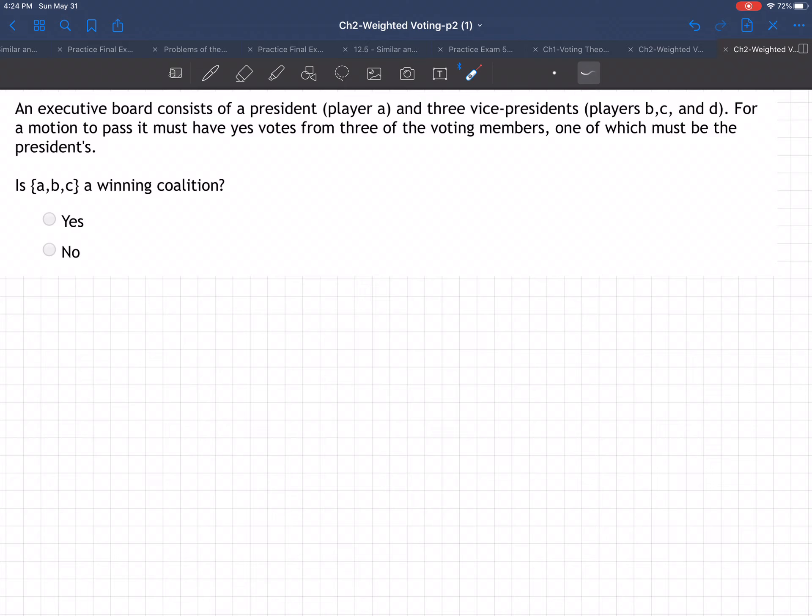That's the crucial sentence there. For a motion to pass, it must have a yes vote from three of the voting members, one of which must be the president's. A is the president.